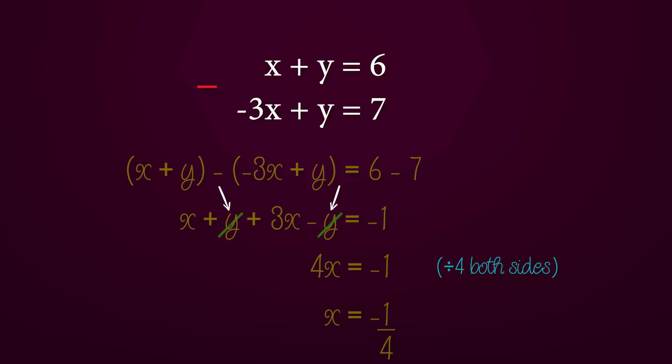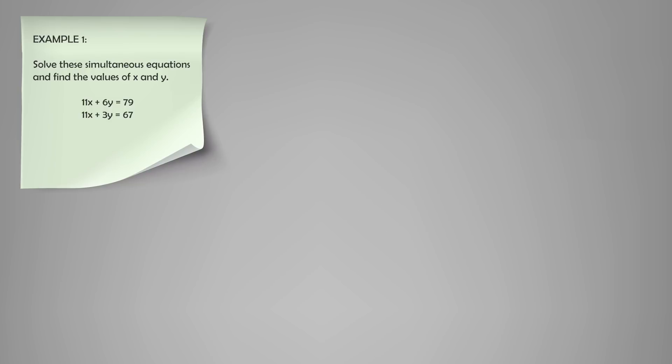The y term was eliminated since we subtracted both equations. If we had added the equations instead, none of the x or y terms would have been eliminated. Now that we've covered the basics, let's go through some examples on how to solve simultaneous equations.